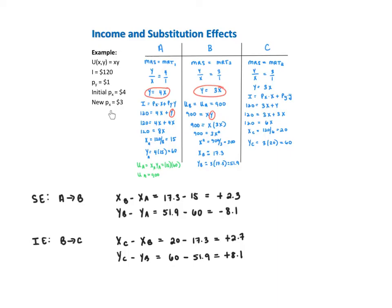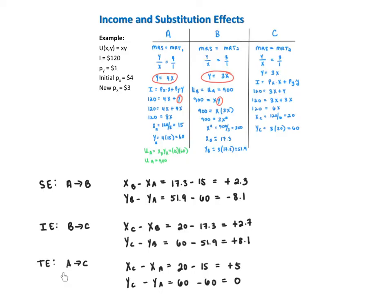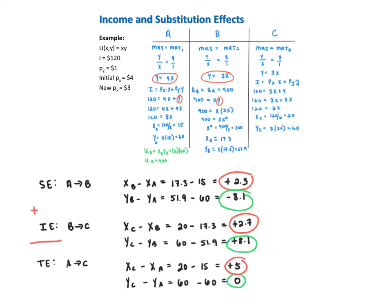In this example, the price of X fell, making the consumer feel richer. The income effect shows that both goods are normal goods, because feeling richer, the consumer wants to buy more of each. The total effect from A to C shows consumption of good X going up by 5 and consumption of Y staying the same. Notice how the substitution and income effects add up: X goes up by 2.3 from the substitution effect and an additional 2.7 from the income effect, for a total increase of 5. The substitution effect pulls Y down by 8.1 and the income effect pulls it back up by the same amount, giving no total effect on Y.